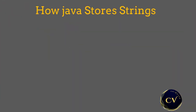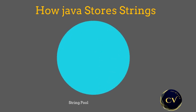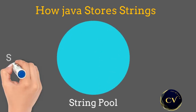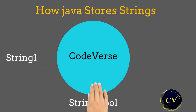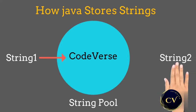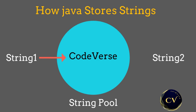The answer to this question lies in how strings are stored in the backend of Java. Java stores strings in a separate space which is called the string pool. So when we initialize string1 equal to codeverse, it will create an object in the string pool with a value of codeverse, and string1 will point to that object. Now suppose we want to define another string with the same value — another string won't create a separate object in the string pool; it will just point to the same old object, which in our case is codeverse.